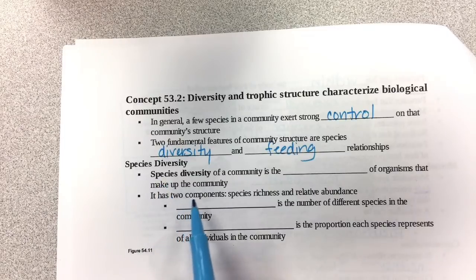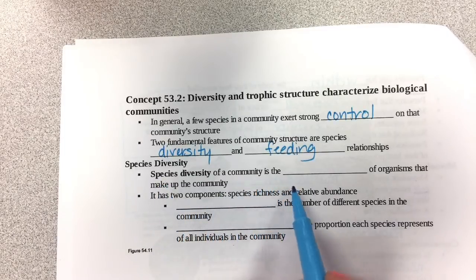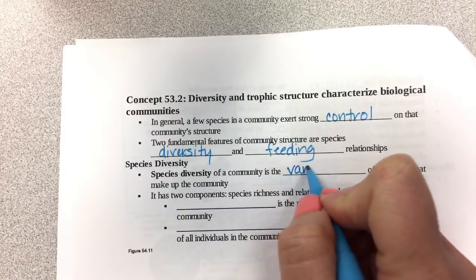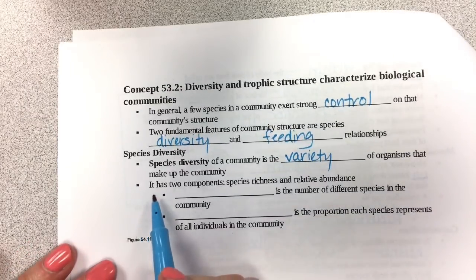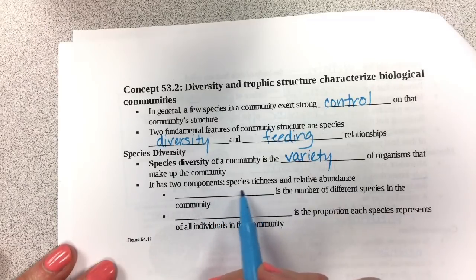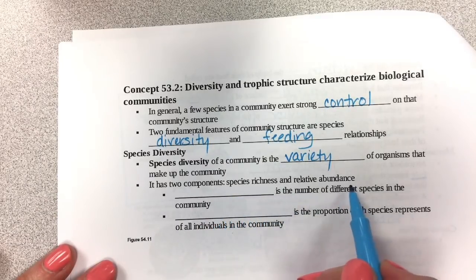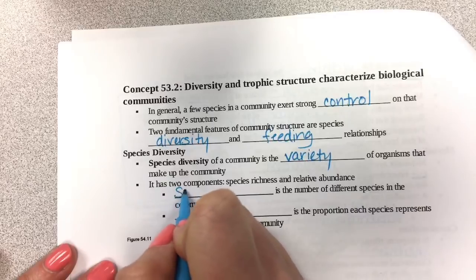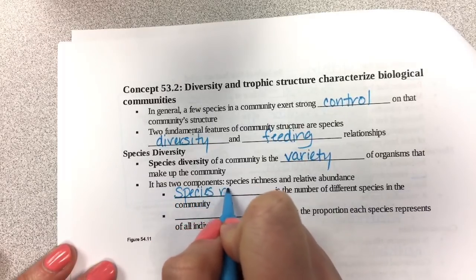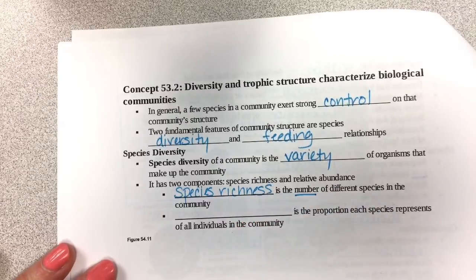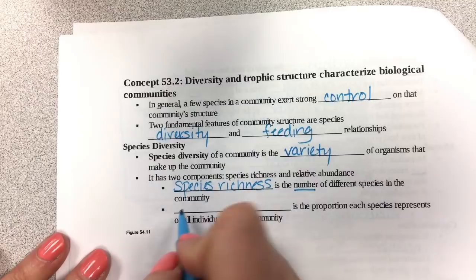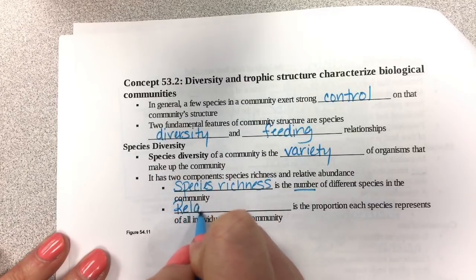Species diversity of a community is the variety of organisms that make up the community. The more different types of organisms you have, the more diverse the community is. It has two components: species richness and relative abundance. Species richness is the number of different species in a community.